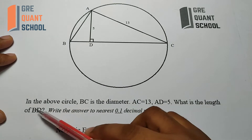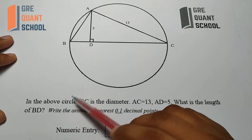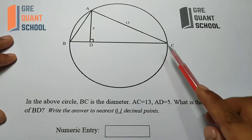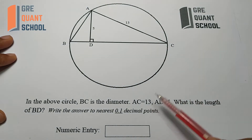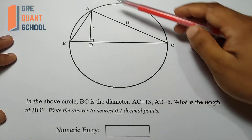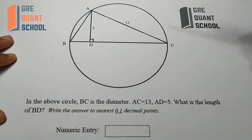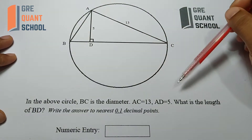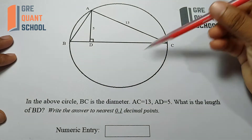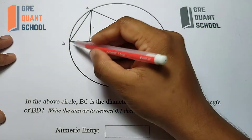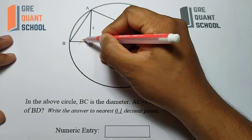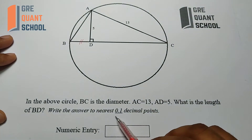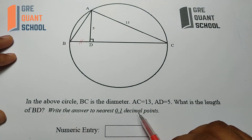The question is: in the above circle, BC is the diameter, AC is 13, AT is 5. What is the length of BT? Write the answer to the nearest 1 decimal point.